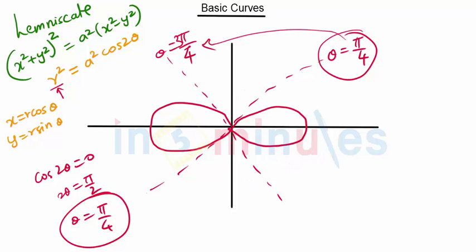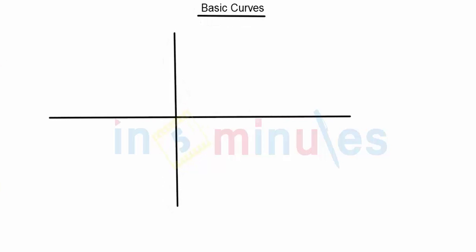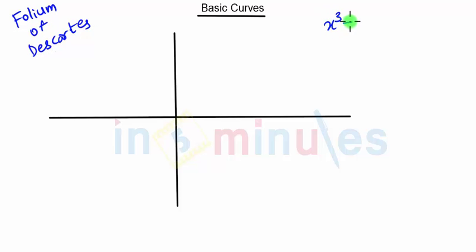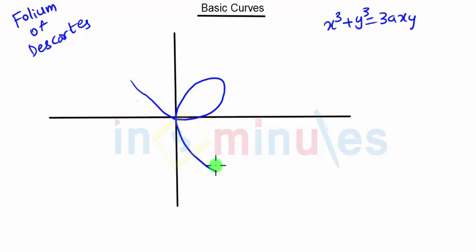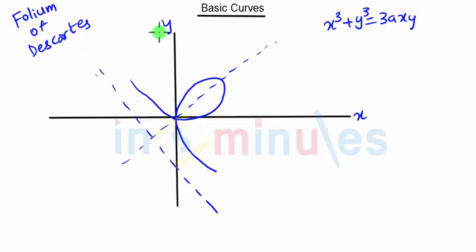After the lemniscate we have another curve known as the folium of Descartes. The equation is x³ + y³ = 3axy. The curve looks something like this, and it also has an asymptote. That covers these basic curves, and more such basic curves we will see in our next video, so stay tuned for future lectures.